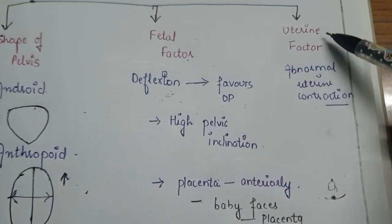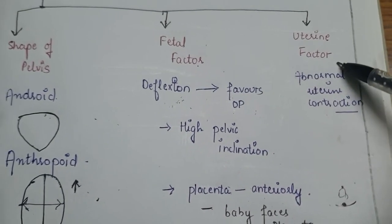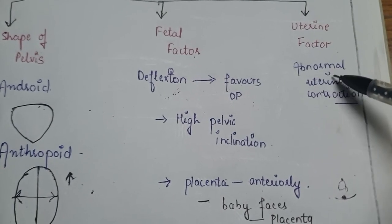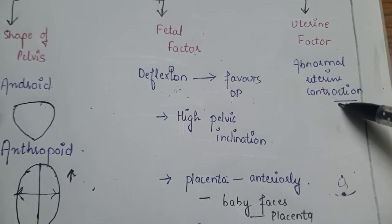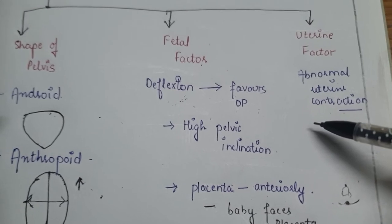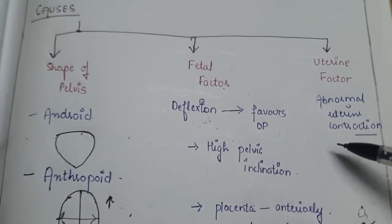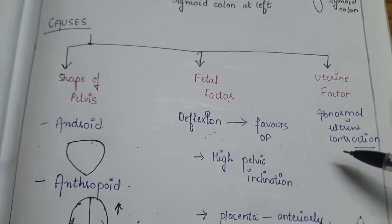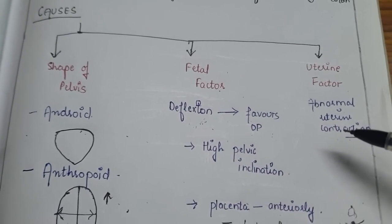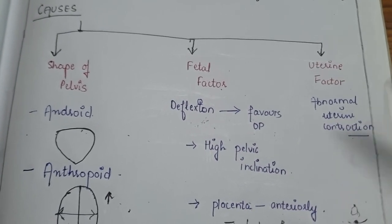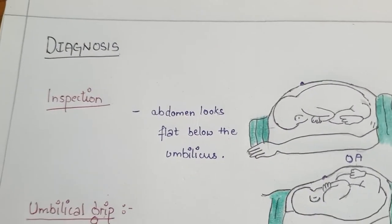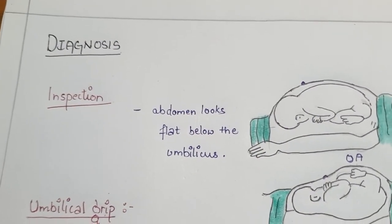Under uterine factor: when there is abnormal uterine contraction, it favors the occipitoposterior position. That's all about the causes of occipitoposterior position.